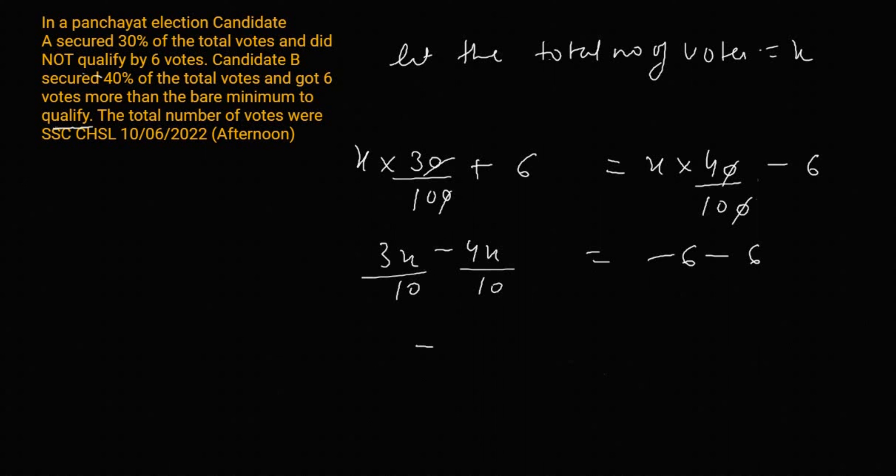If we solve this, 3X over 10 minus 4X over 10 equals minus 6 minus 6, which gives negative X over 10 equals negative 12. Minus and minus cancel out, so X equals 120.